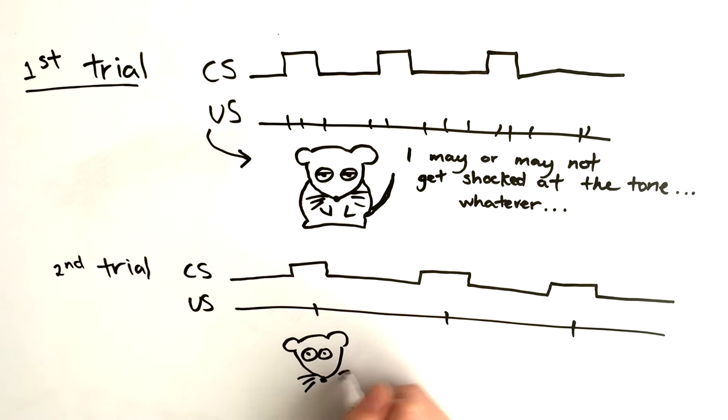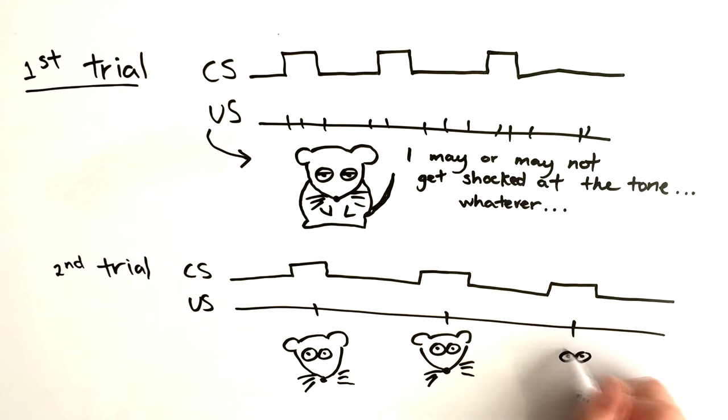What do you mean by base rate? The base rate refers to the frequency with which the unconditioned stimulus is presented, whether or not the conditioned stimulus is presented. When the CS-US contiguity takes place, it has to outnumber the amount of presentations of the unconditioned stimulus in the absence of the conditioned stimulus.